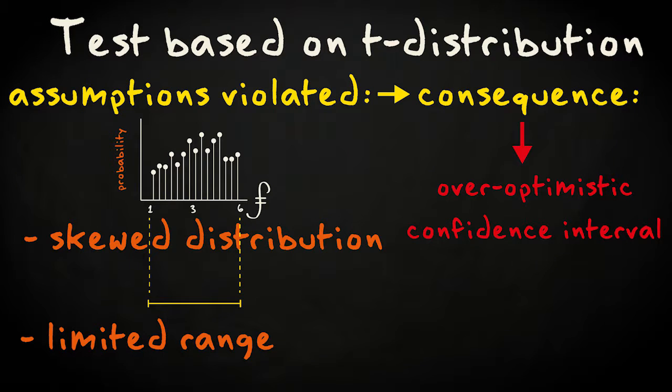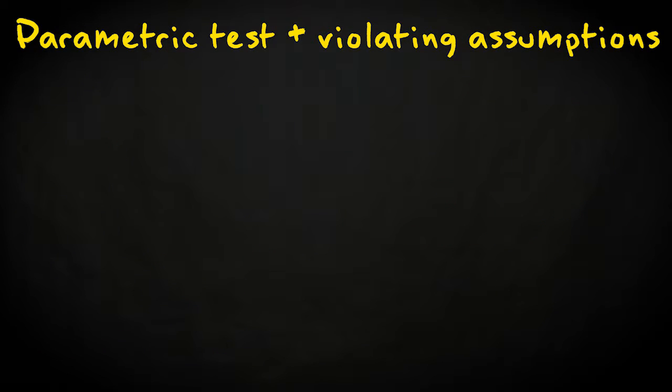We could check this by repeating the sampling of 7 pieces of pastry a hundred times. It would then, in only around 90 cases, lead to a confidence interval which contains the true mean. So, by applying a parametric approach to calculate a confidence interval or a hypothesis test, while the assumptions are violated, the numbers that you get become less accurate and may in some extreme cases even be very wrong.